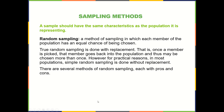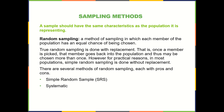There are several methods of random sampling, each with pros and cons. These include systematic samples, stratified samples, and cluster samples. These are all random and we'll talk about why they're random.